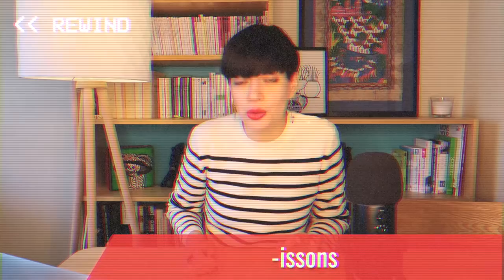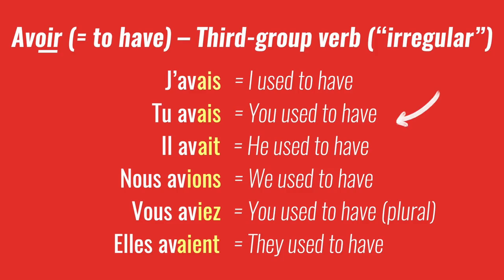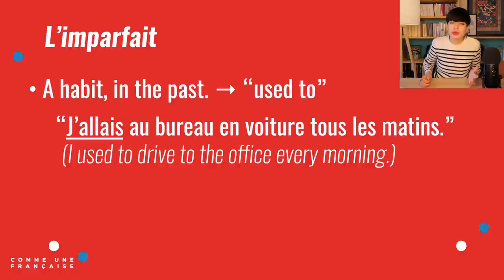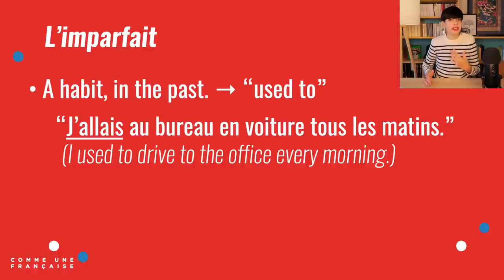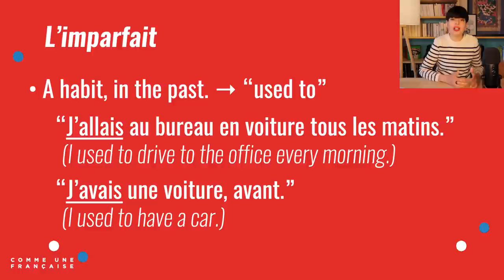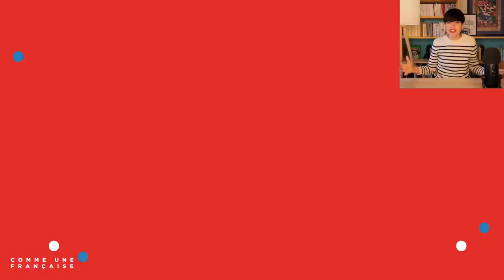But let's stop for a minute. What happened earlier with 'avoir'? Why did I write 'used to have'? Well, that's the second meaning of l'imparfait — it is a habit in the past. As in, 'j'allais au bureau en voiture tous les matins' — I used to drive to the office every morning. Or something more simple: 'j'avais une voiture avant' — I used to have a car before. And this is over.